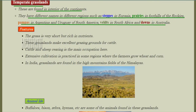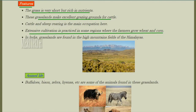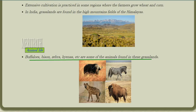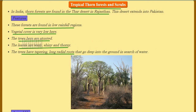Temperate grasslands are found in the interior of continents and have different names in different regions: steppes in Eurasia, prairies in the foothills of the Rockies, pampas in Argentina and Uruguay, veldt in South Africa, and downs in Australia. The grass here is very short but rich in nutrients, making excellent grazing grounds. Cattle and sheep rearing is the main occupation. Extensive cultivation is practiced, with wheat and corn as main crops. In India they are found in Himalayan regions. Animals include buffaloes, bison, zebra, and hyenas.